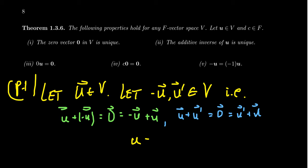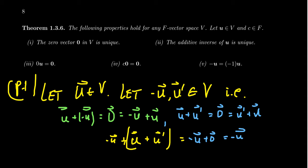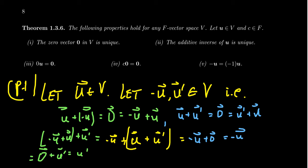Consider u plus u prime plus negative u. Because vector addition is associative, we can group u plus u prime first, which equals the zero vector, and adding the zero vector to negative u gives back negative u. But if we regroup as negative u plus u plus u prime, then negative u plus u equals zero, and zero plus u prime equals u prime. Therefore u prime equals negative u, proving the additive inverse is unique.